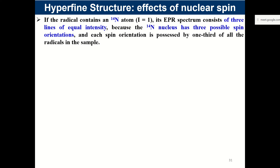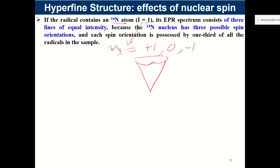Suppose there is a ¹⁴N atom in the radical. The electron interacts with the ¹⁴N nitrogen nucleus, for which the quantum number I = 1. So mI will have possible values: +1, 0, and −1. The vector in three dimensions can be oriented in three ways on a cone — either pointing upward, horizontal, or downward along the quantization axis.